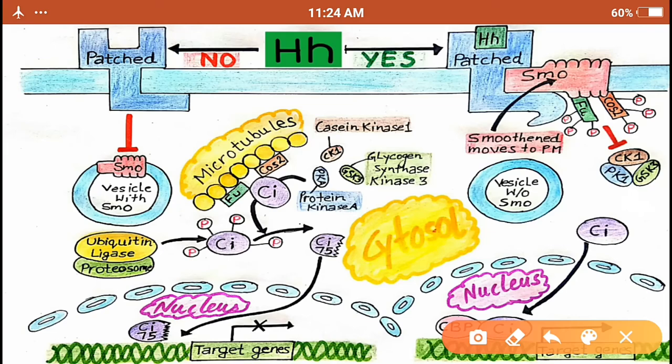Hello friends, welcome to BMH Learning. This is the second part in the lecture series on signaling pathways controlled by ubiquitination. In the first part we talked about Wnt pathway. In this video we are going to discuss the Hedgehog signaling pathway.